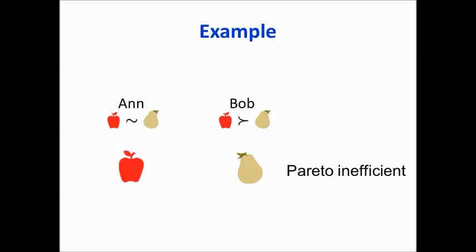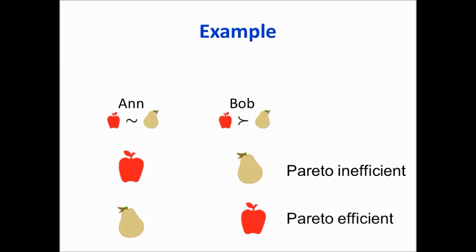There is another way we could allocate these objects: give Anne the pear and Bob the apple. This allocation is Pareto efficient because we cannot find a Pareto improvement anymore. The only other allocation is the one we just discussed, and in that one Bob would be worse off. So the second allocation is Pareto efficient and the first one is Pareto inefficient.